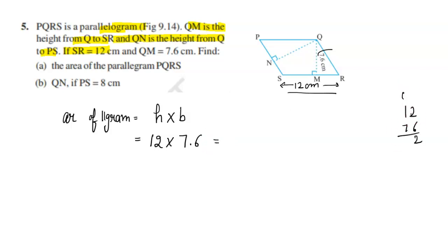6 times 12, 6 ones are 6, 7 times 12 is 14, 7 and 7 plus 1 is 8. So 91.2 cm square.